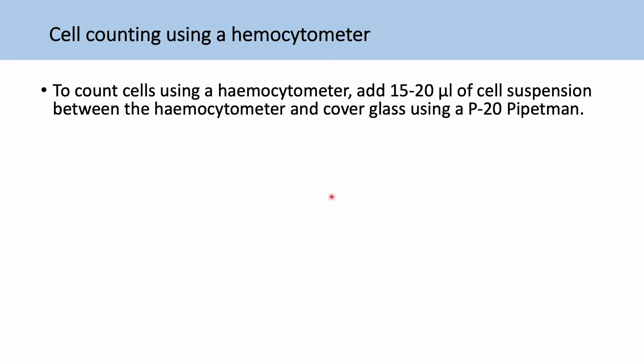So just going through the process of actually using the hemocytometer. You're going to add around 15 to 20 microliters of your cell suspension in between the hemocytometer and the cover glass. And it will be kind of taken up by capillary action to cover the area.